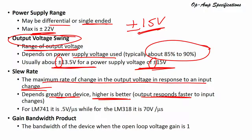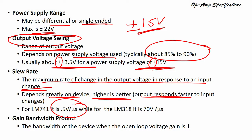For the LM741, the slew rate is about 0.5 volts per microsecond, while for the LM318 it is about 70 volts per microsecond. The gain bandwidth product is the bandwidth of the device when the open-loop gain is 1 — that bandwidth is called the gain bandwidth product.